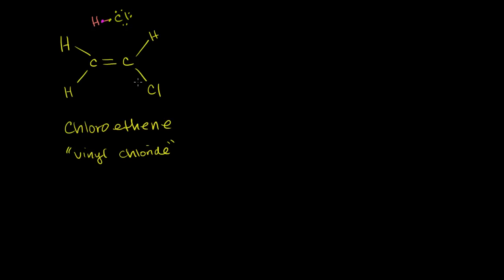Let's say we have some chloroethene here. You wouldn't have to call this 1-chloroethene, because if you just go with chloroethene, there's only one way to draw this. The common name for chloroethene is vinyl chloride. So let's say we have a bunch of chloroethene molecules mixed with some hydrogen chloride.